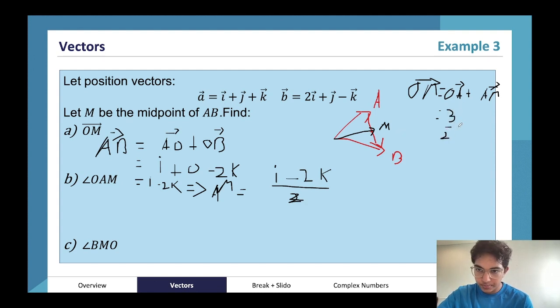So 3 over 2 i plus j plus 1k minus 1, and it's just going to be 0 plus 0. So all left with for OM is 3 over 2 i plus j. Cool, nice and easy though, pretty tedious but overall I think pretty simplistic.